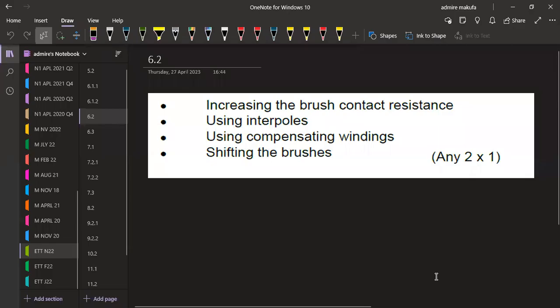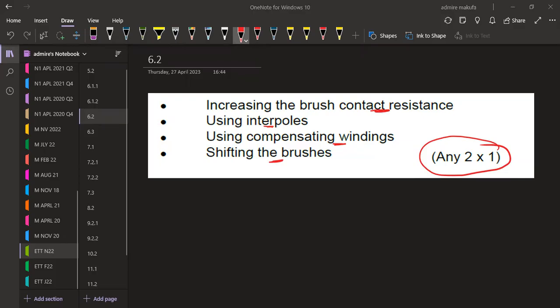So we've got a lot of methods that we can have, but just a few. We can reduce this sparking by increasing the brush contact resistance, using interpoles, using compensating windings, shifting the brushes. So just any two from these ones can be based on your answers. So just have to pick any two. So if you have got any others that you know about or that you can help us with, make sure that you mention them on the comment section so that we can also add for more revisions.